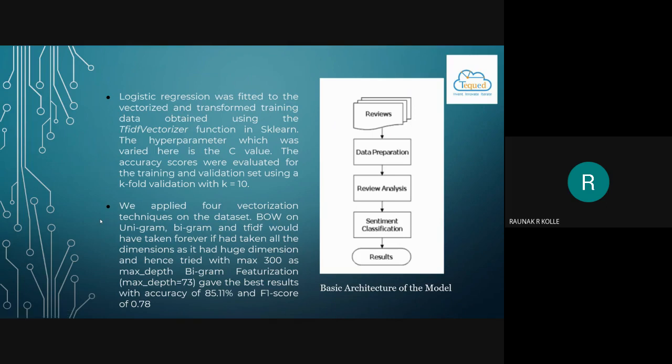We will apply four vectorization techniques on the data set. BOW on unigram, bigram and TF-IDF would have taken forever if they had taken all the dimensions as it had huge dimensions and hence tried with max 300 as max depth bigram features, which give the best results with an accuracy of 85.11% and an F1 score of 0.78. On the right side of the slide, we can see the basic architecture of the model, where the reviews are taken as the input and the data is prepared. The reviews are analyzed and classified on the further step and then the results are obtained.